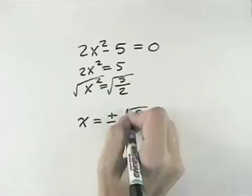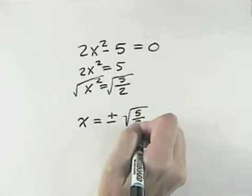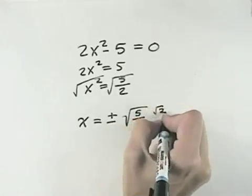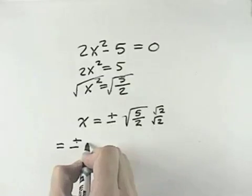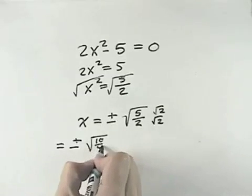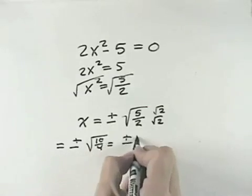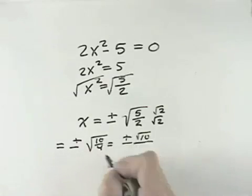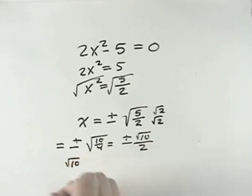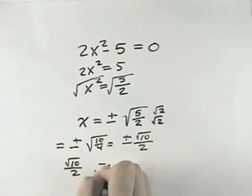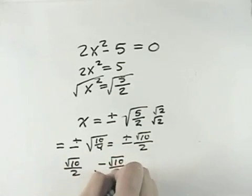And so in this case, we want to rationalize the denominator. We can do that by multiplying by the square root of 2 over 2 so that our answer could also be expressed as plus or minus the square root of 10 over 4, which simplifies to plus or minus the square root of 10 over the square root of 4, which is 2. So we have positive square root of 10 over 2 and negative square root of 10 over 2.